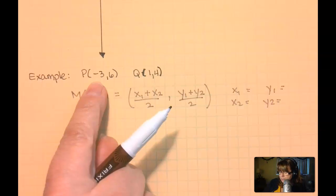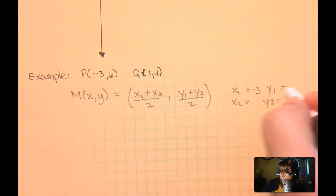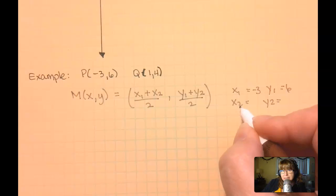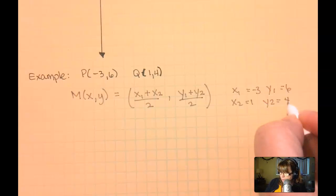My first point I'm just going to say is P, negative 3, 6, and Q is my second point, so 1, 4.